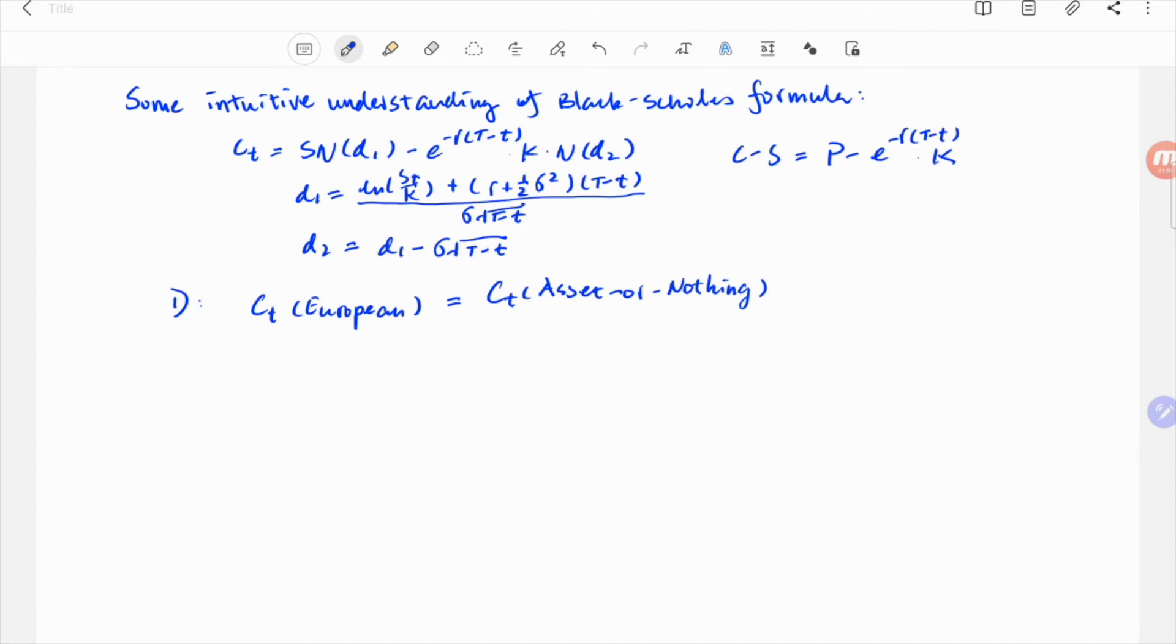That would be just the asset term, right? In this case, the option is called asset or nothing, meaning if it's above the strike, you get the asset, while if it's below, you get nothing.